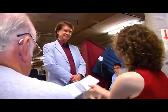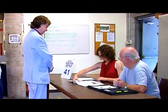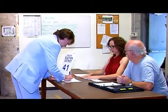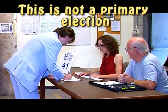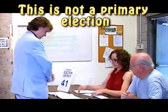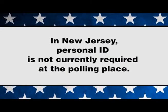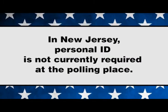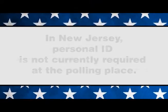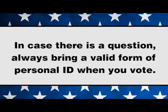They will then compare your signature with the one provided in the poll book. If your signature matches, the board worker will have you sign the poll book. If this is a primary election, you will be permitted only to vote for candidates of the party for which you are currently registered. In New Jersey, you are not required to show an ID to vote unless your identity could not be verified when you first registered. It is a good idea to always bring a valid form of personal ID when you vote.